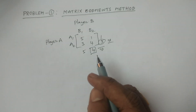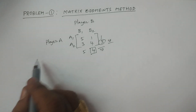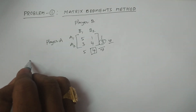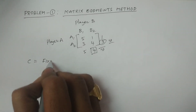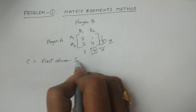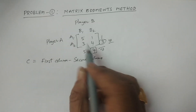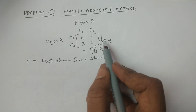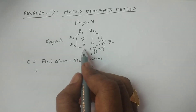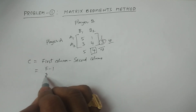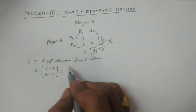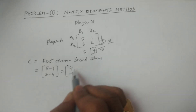What we need to calculate first: a new matrix C. C is formed by subtracting columns. First column minus second column, and second column minus third column. First column: 5 minus 3 = 2. Second column: 1 minus 4 = -3. So the new matrix C is [2, -3; 2, -1] — wait, more precisely: element (1,1)=5-1=4, (1,2)=5-3=2, (2,1)=3-4=-1. The resulting matrix is [4, 2; -1, -3].